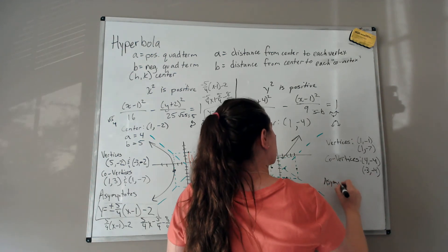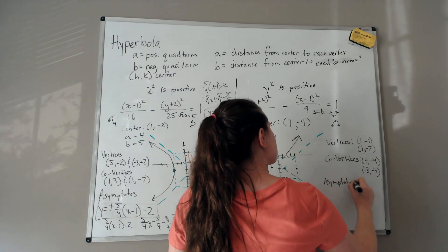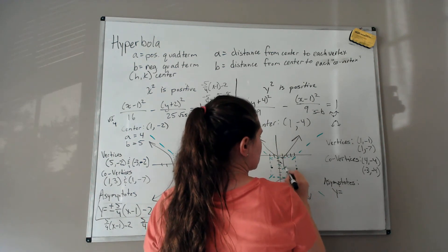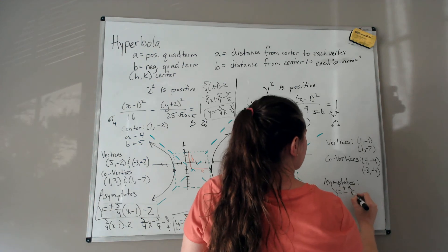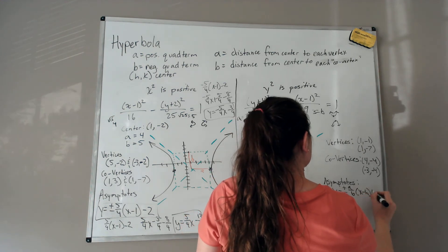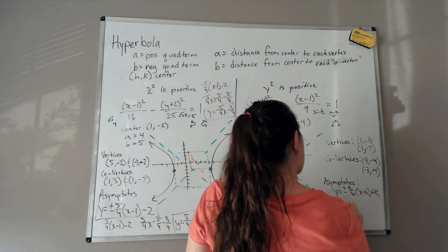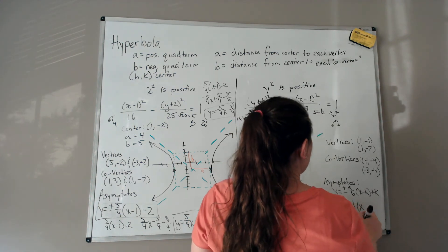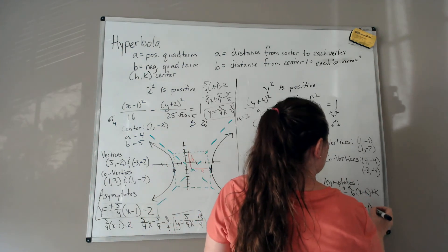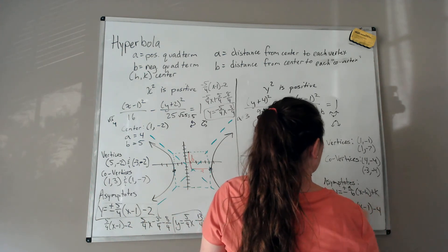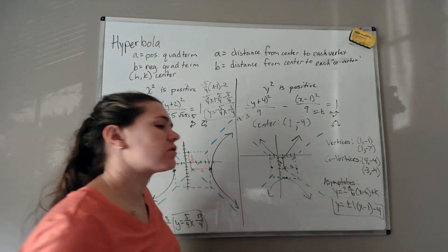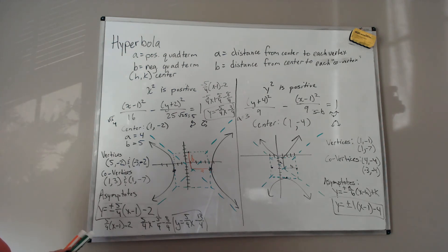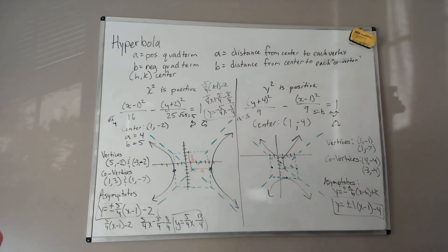The asymptote equations are y = ±(a/b)(x − h) + k = ±(3/3)(x − 1) − 4 = ±1·(x − 1) − 4. You don't have to convert these to slope-intercept form, but you're welcome to distribute if you'd like.